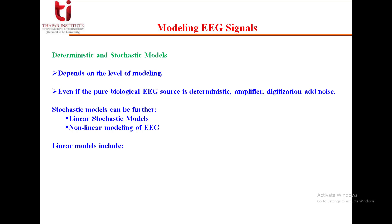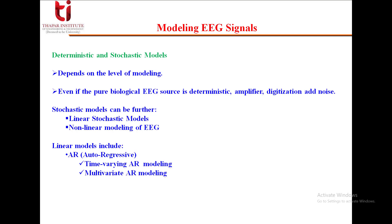Stochastic models can be further divided into linear stochastic models or non-linear modeling of EEG signals. We will keep our main focus on the linear models. In this we have autoregressive modeling, which can be time-varying, multivariate, or AR modeling with impulse input. We can also have ARMA, which includes autoregressive moving average modeling.